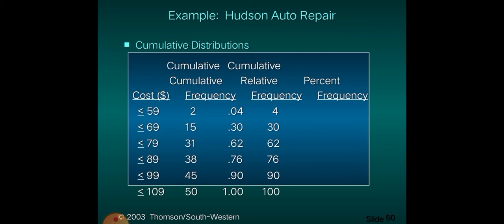Then 38 plus the frequency of 90 to 99 — which is 7 — equals 45. The last class, 100 to 109, has a frequency of 5: 45 plus 5 equals 50. This is correct because our total raw data is 50. At the last class, the cumulative frequency must equal the total number of raw data. So you add each class frequency cumulatively from the first class down to the last.